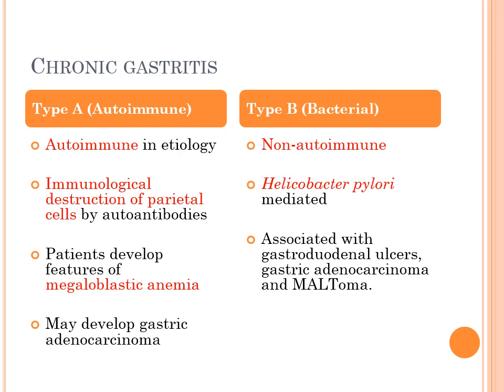In chronic gastritis, Type A and Type B differ as follows. Type A — 'A' for autoimmune — has an autoimmune etiology. Type B — 'B' for bacterial — is caused by Helicobacter pylori. In Type A, auto-antibodies cause immunological destruction of parietal cells, and patients develop features of megaloblastic anemia. In Type B, patients are associated with gastroduodenal ulcers, gastric adenocarcinoma, and MALToma. In Type A gastritis, features of gastric adenocarcinoma may sometimes also develop.